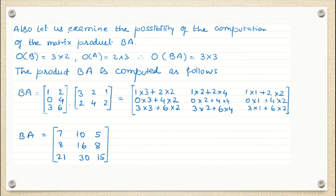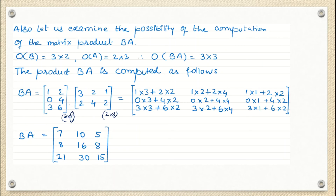If I am going to perform the product of B and A, I first check whether we can perform this multiplication. Matrix B is a 3 cross 2 matrix and matrix A is a 2 cross 3 matrix. The number of columns of B is 2 and the number of rows of A is 2, so they are the same — multiplication is possible. The resultant matrix BA will have dimension 3 cross 3, with a total of 9 elements.